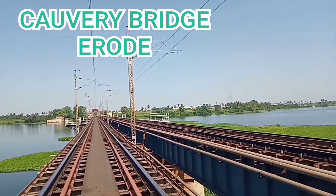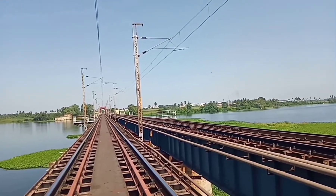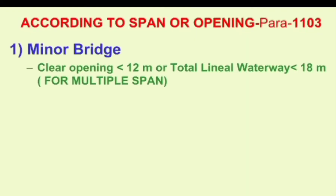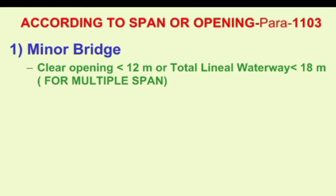This is the E-road Kaveri Bridge of Southern Railway, which is the main bridge shown here. Let's talk about the types of bridges. According to the Indian Railway Bridge Manual, bridges are classified using clear opening or span.